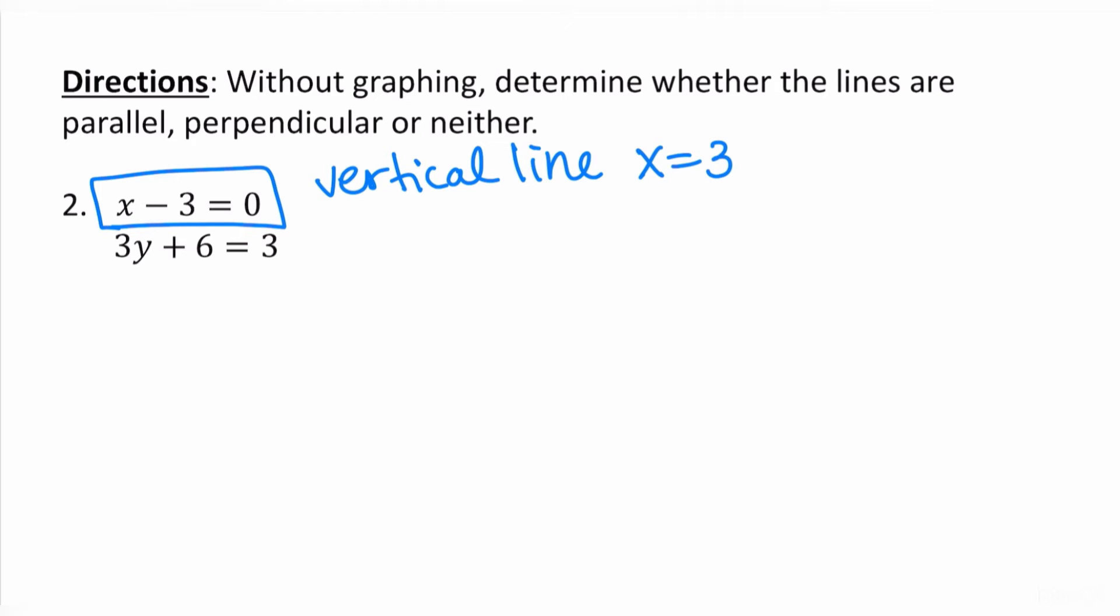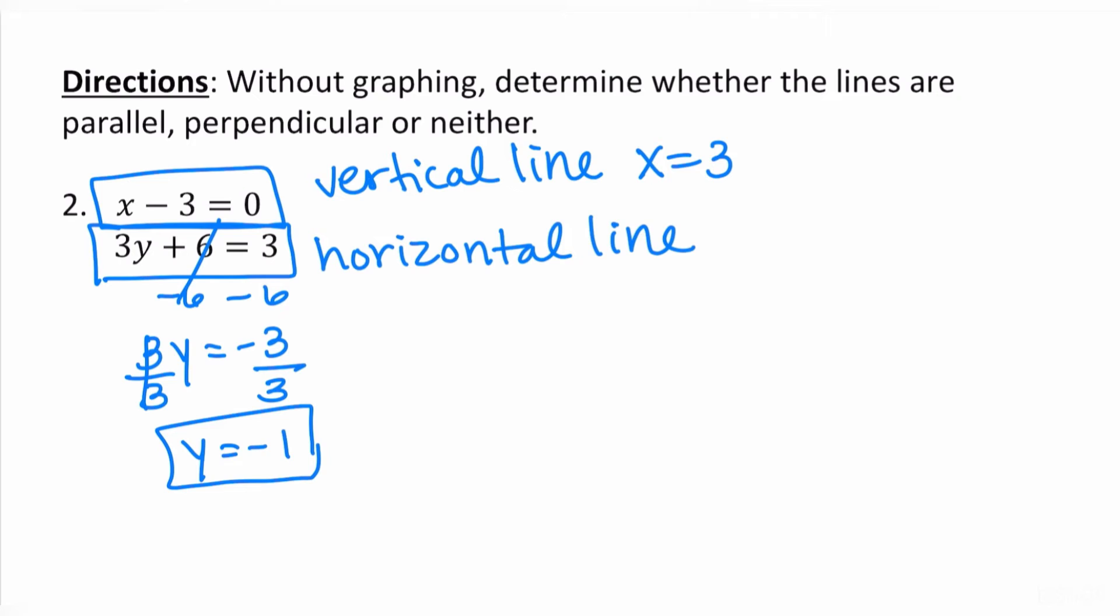In the second equation, I have 3y plus 6 is equal to 3. There's no x at all, which tells me that this one is a horizontal line. And if I wanted to, I could solve for y. I'm going to subtract 6 from both sides. I get 3y equals negative 3. And if I divide by 3 on both sides, I get y is equal to negative 1. So these are my two equations: x equals 3, y equals negative 1.